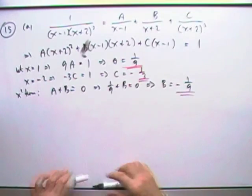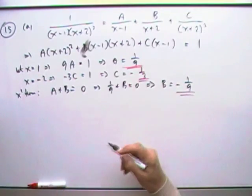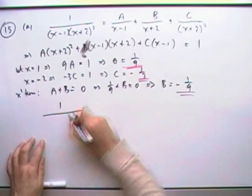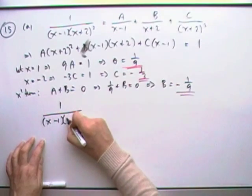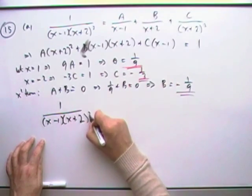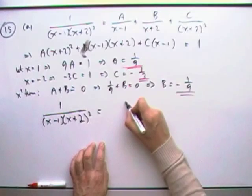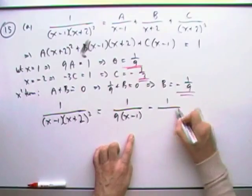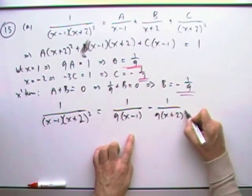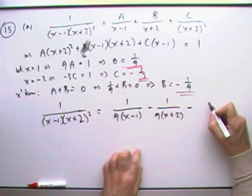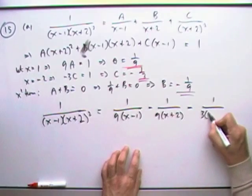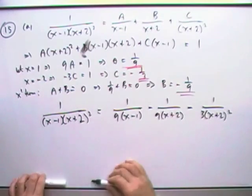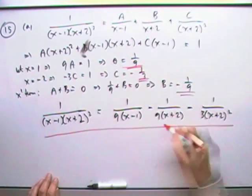So there's the first part. But I did say express it, didn't I? So I've got 1 over x minus 1, x plus 2 squared equals, just feed that line. So it's 1 over 9, x minus 1, minus 1 over 9, x plus 2, minus again, 1 over 3, x plus 2 squared. That's the first part.